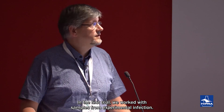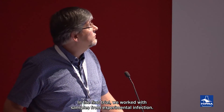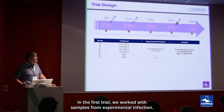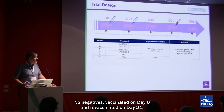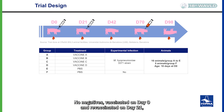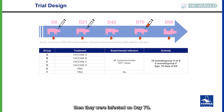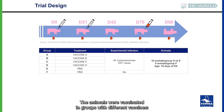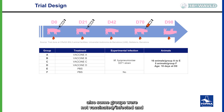In the first trial, we worked with samples from an experimental infection trial. Known negatives were vaccinated on day zero and revaccinated on day 21, then infected on day 70. The animals were bled on days 0, 21, 42, 70, and 88. The animals were vaccinated with different groups using different vaccines — the normal vaccines present in the market. There were also some groups that were not vaccinated and infected, and not vaccinated and not infected.